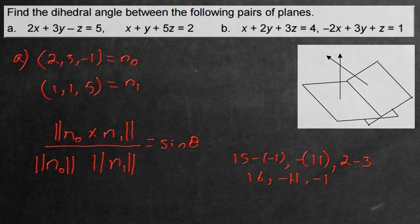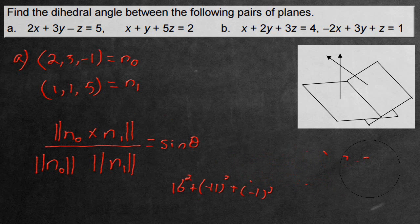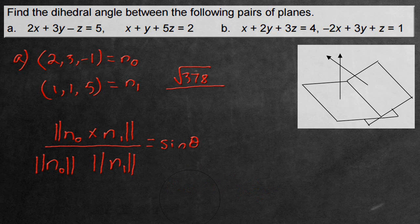Now that we found the cross, according to the equation, we have to find the magnitude or the length. We do this by squaring everything: 16 squared plus negative 11 squared plus negative 1 squared, all under the square root. This equals the square root of 378. I'm not actually going to solve that just yet because it's a lot of decimal places and I want to keep my answer as accurate as possible.